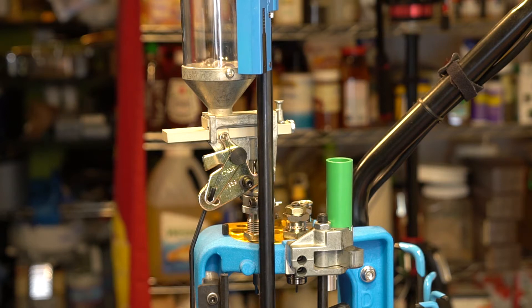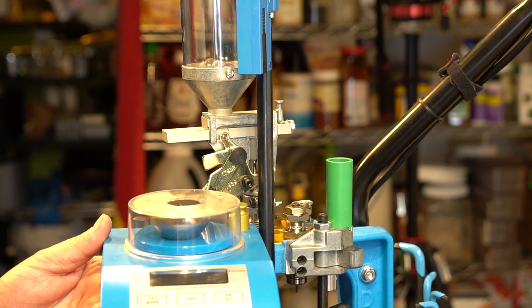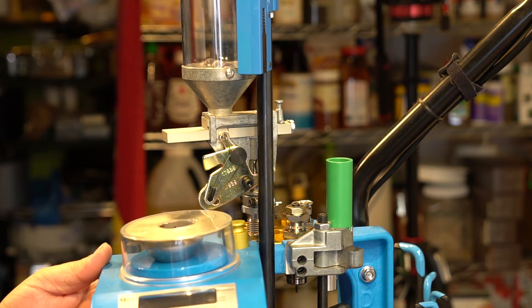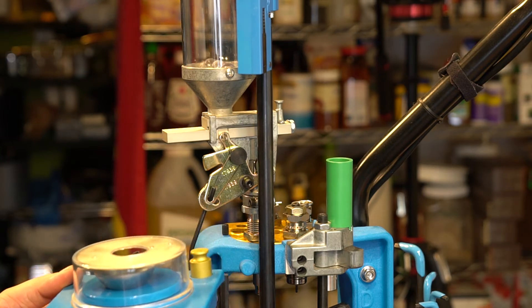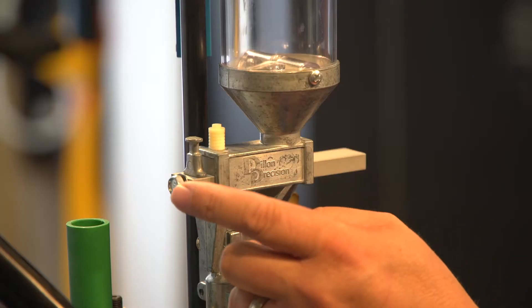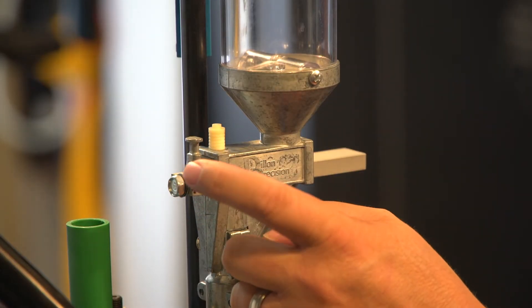Something you're going to need is a powder scale. This is the Dillon one, it's a pretty nice little scale, it's battery powered as well as you can plug it in. So that thing works great and another little tip I can give you is on the back of the adjustment here for the powder adjustment,